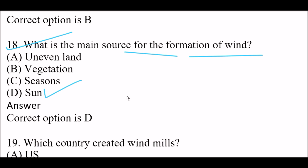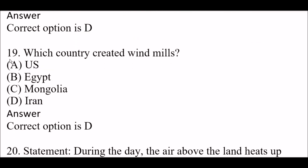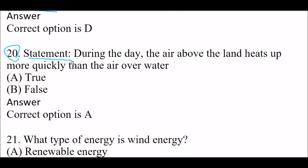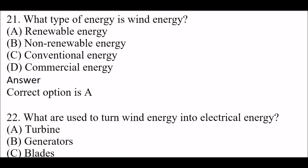Next question: which country created windmills? Option A: US. Option B: Egypt. Option C: Mongolia. Option D: Iran. Right answer is Option D — Iran. Next question: the statement 'during the day the air above the land heats up more quickly than the air above water' — is this true or false? Answer: true.